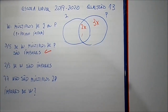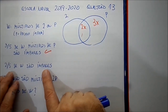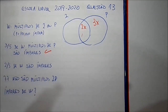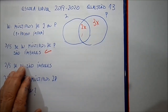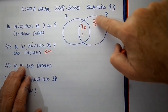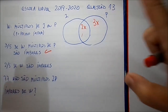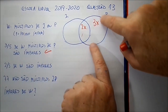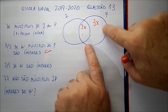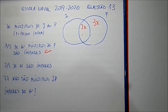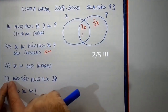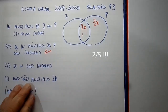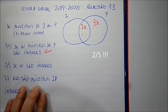Ele falou ainda que 2 quintos dos elementos de W são ímpares. Os ímpares são esses aqui — são os únicos. Esse 3x aqui corresponde a 2 quintos de tudo. E ele falou ainda que 77 não são múltiplos de 2P.